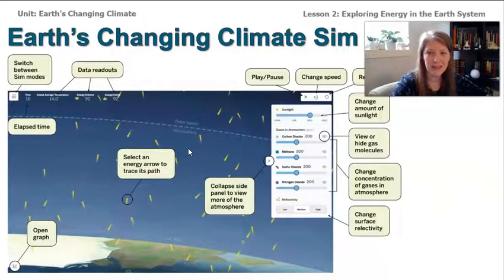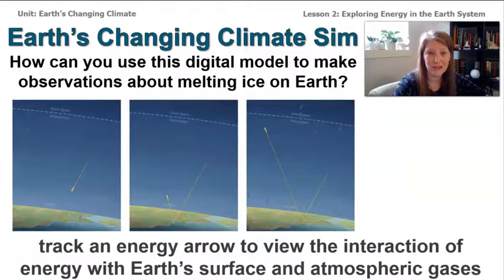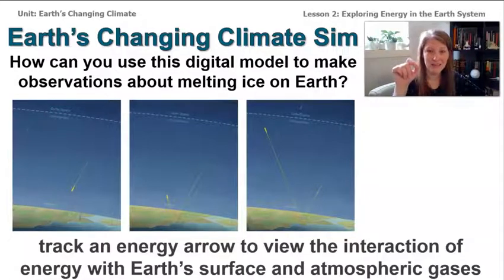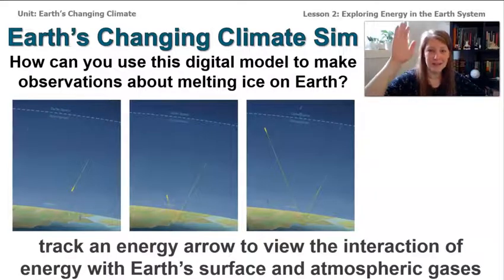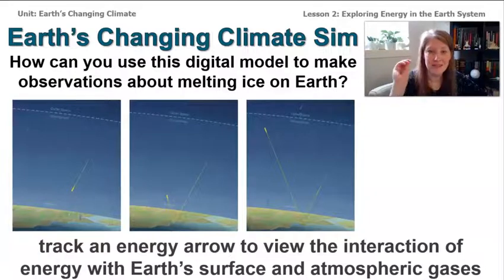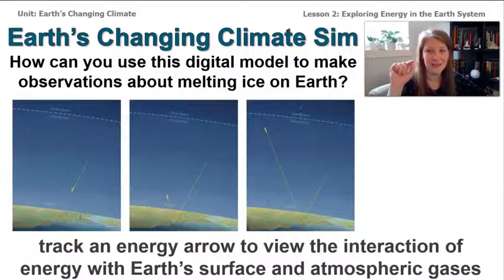One thing you can do is click on one of the energy arrows and watch it as it moves around in the atmosphere — what happens when it hits Earth's surface, and what happens when it exits the Earth's system. The best way to do that is to pause the sim, click on an arrow, and then hit play. It is possible to click on an arrow while the sim is playing, but it's easier if you pause it.